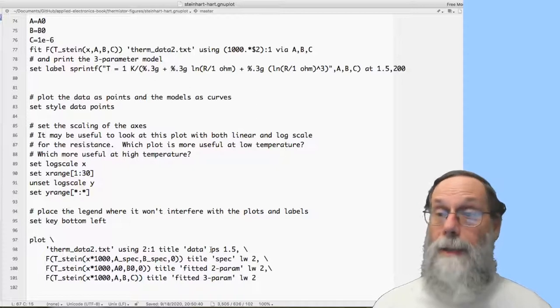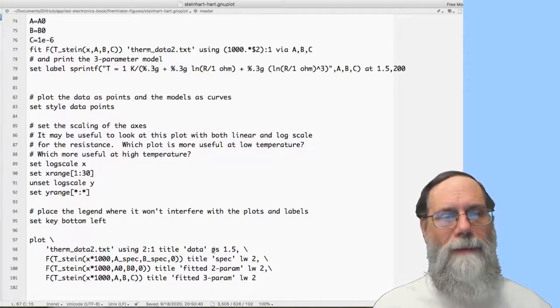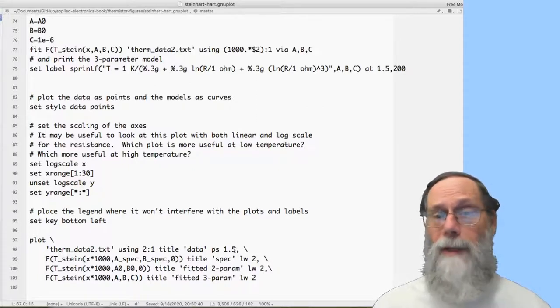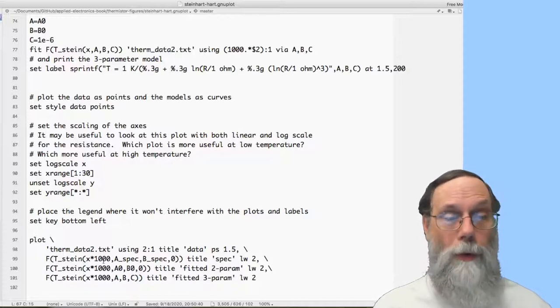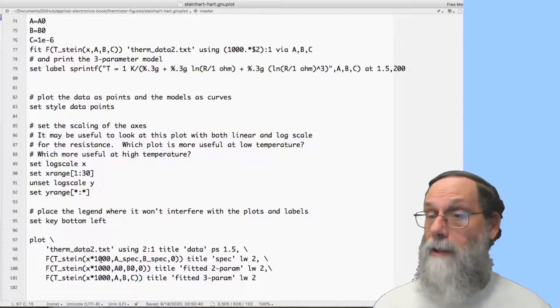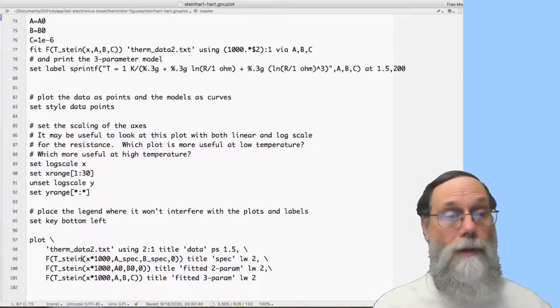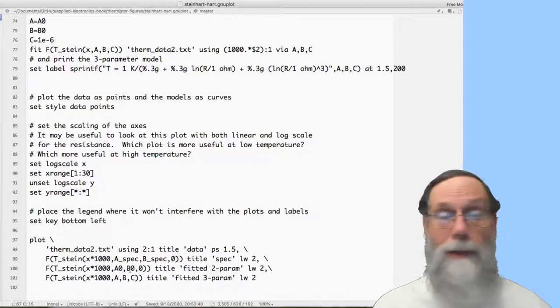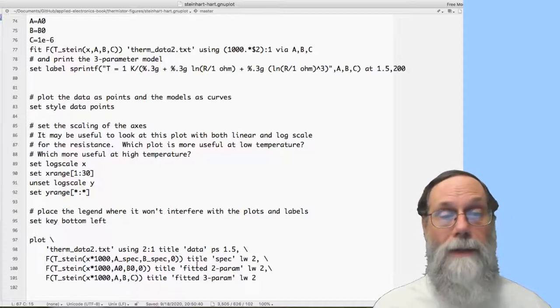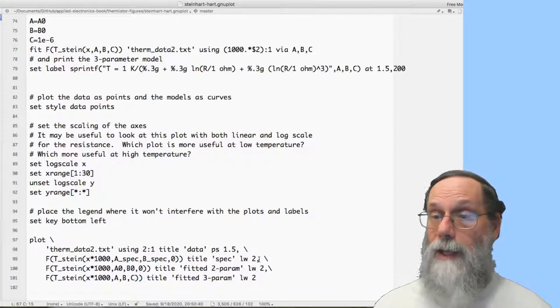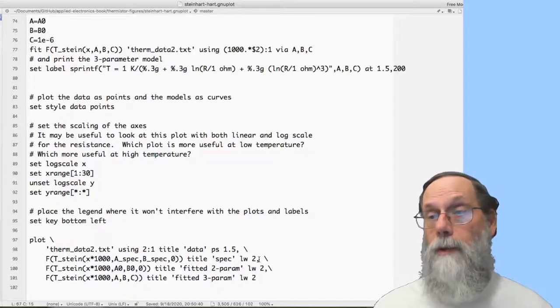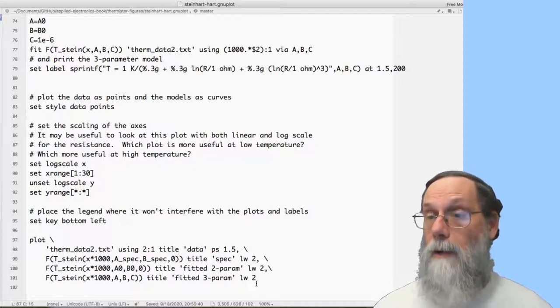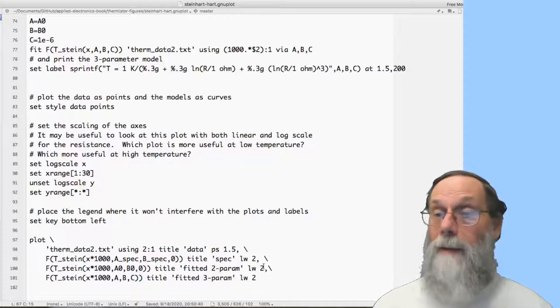And then I give it a title. I'll say that this is the data. And the ps is point size. It's just an abbreviation for that. And I'm saying make it 1.5 times the normal size. So I'm making the points kind of big to make them very obvious. And then I'm going to do in Fahrenheit what the model says. And here I have to multiply x by 1,000 because my x-axis is in kilo-ohms now, but I need for this function to have the resistance in ohms. And let's do it with the specified A and B, the ones from the spec sheet. I do it with the A0 and B0 from the two-parameter fit. And I do it with A, B, and C from the three-parameter fit. And I give each one a title. The LW2, that's line width, and it's just to make the lines a bit fatter.